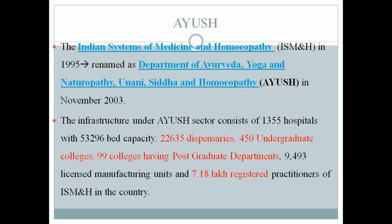The AYUSH system — Indian System of Medicine and Homeopathy — was later renamed the Department of AYUSH (Ayurveda, Yoga, Unani, Siddha, and Homeopathy) in 2003. The AYUSH sector consists of around 1,350 hospitals, numerous dispensaries, and 99 colleges with postgraduate departments.